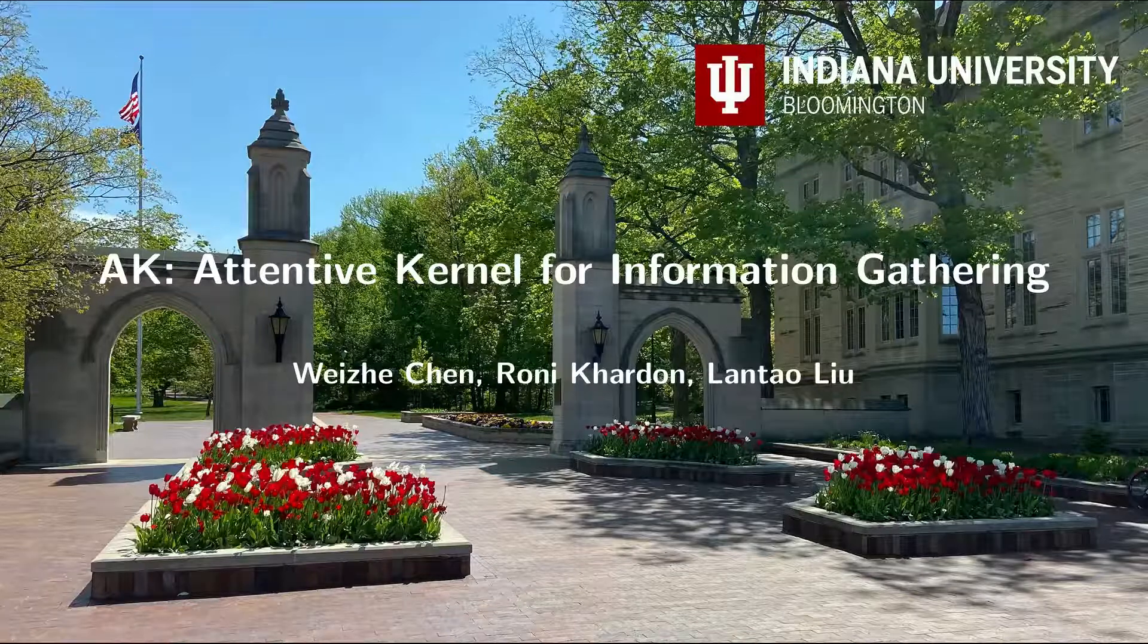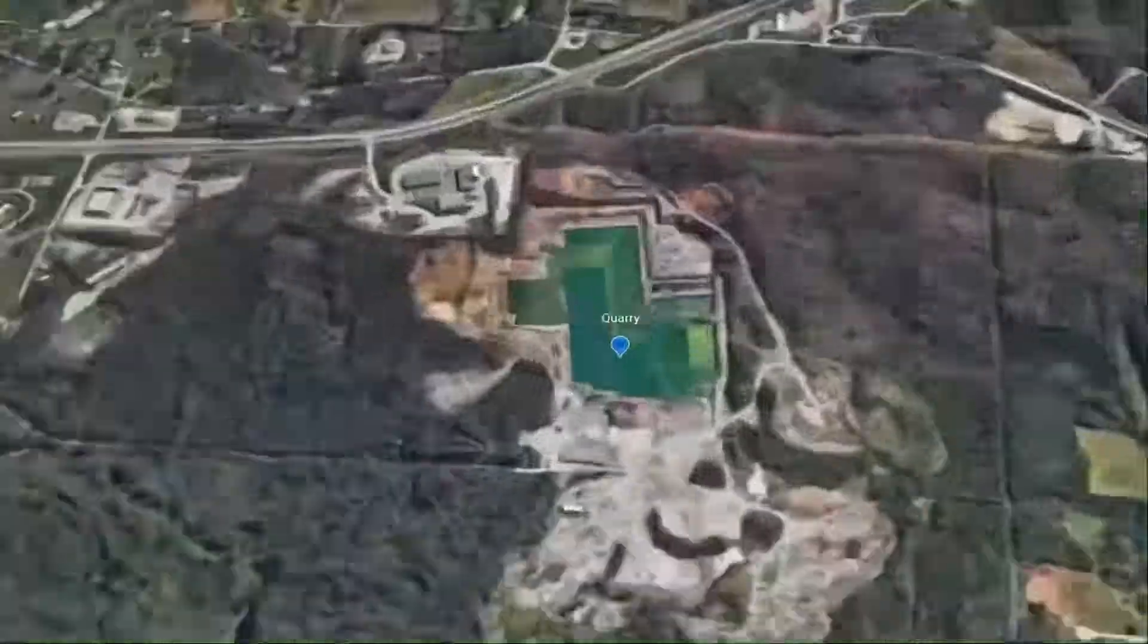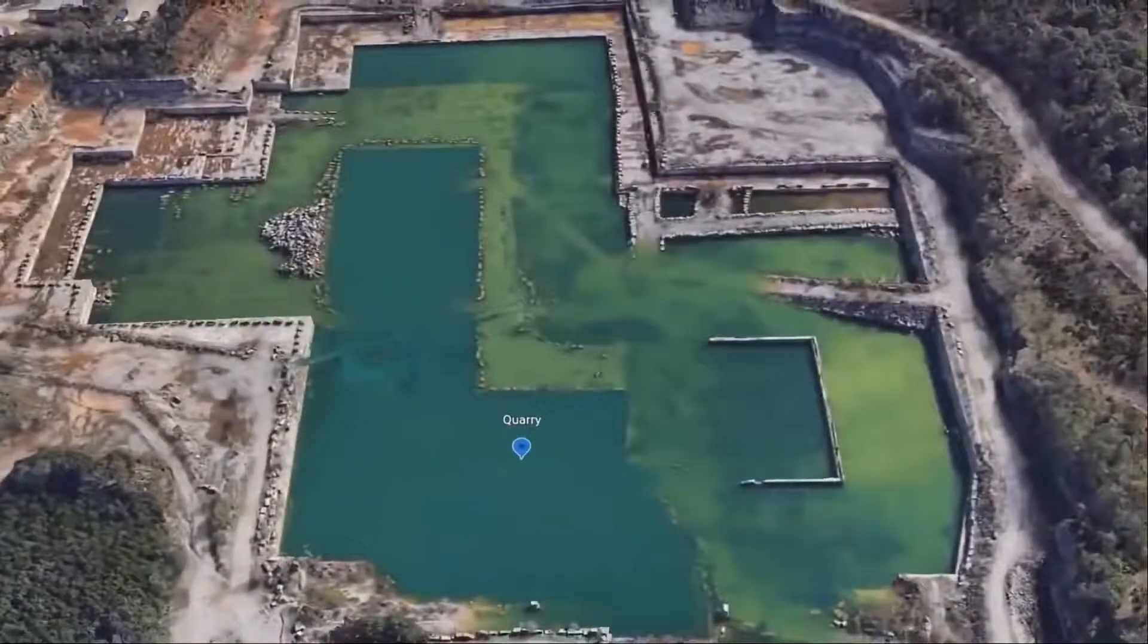We present AK, Attentive Kernel for Robotic Information Gathering. In this experiment, our goal is to build an elevation map of the quarry lake within the workspace.